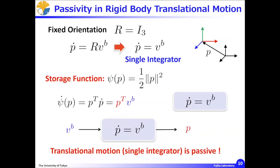Let us focus on translational motion only. If there is no rotation — that is, if the rotational matrix R equals the identity matrix I — then the rigid body motion becomes a simple single integrator. For a single integrator, we can define a storage function: psi equals one-half P squared. Then, from a simple mathematical manipulation, it is easy to show that the translational motion is passive.